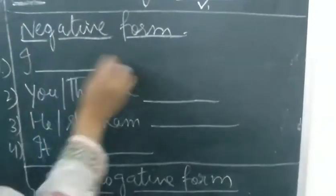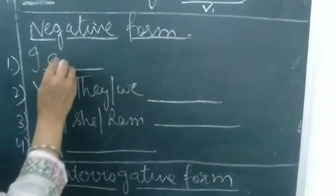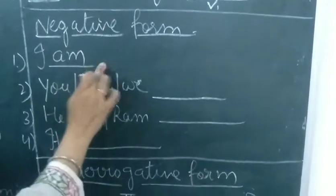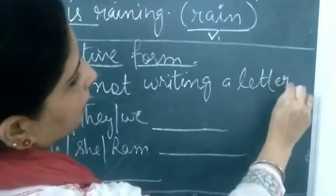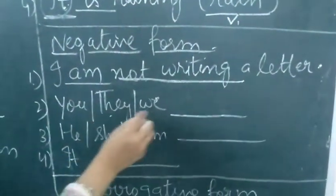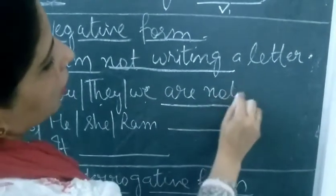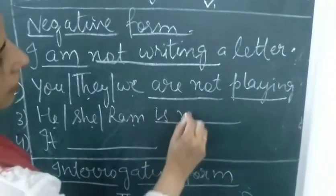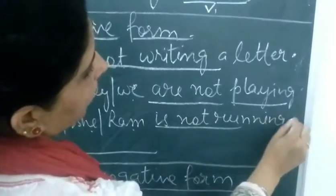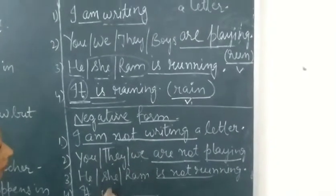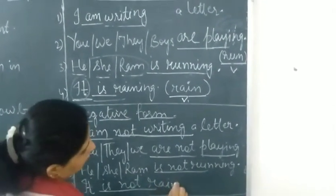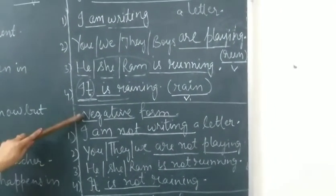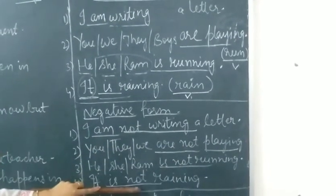Now comes the negative form of the present continuous sentences. Any example you can take here. Like here we have written, I am writing a letter. Now, we have to change it into negative form. Only not we have to add here as I told you before. So, I am not writing a letter. Then you, they, we are not playing. Then he, she, ram is not running. And if I have to change this into negative form, it is not raining. So, clear negative form only not we have to add everywhere to change it into negative sentence.